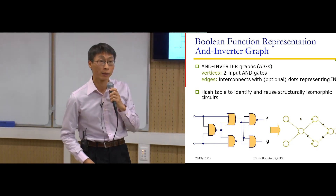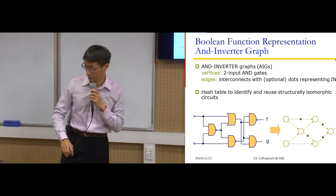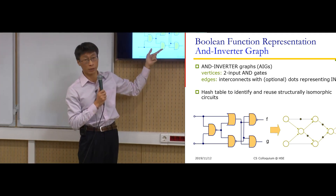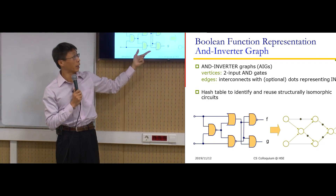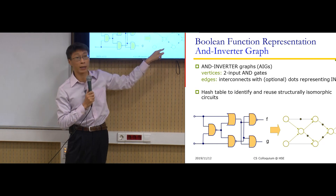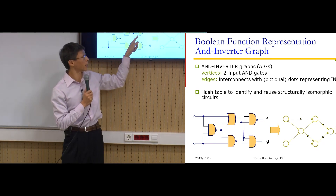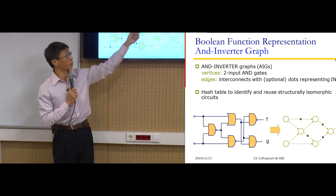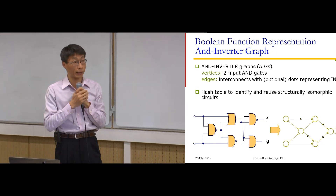An inverter means negation. When we translate a graph into AIG, originally we might have five gates, but after translation we may have only four nodes — not counting input nodes, just AND gates. The gate reduction comes from structural hashing: some nodes differ only by negation, so they can be merged. That is another reason why this representation can be economical.